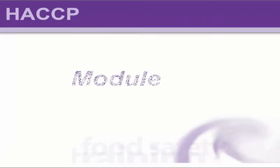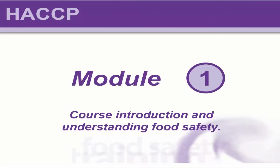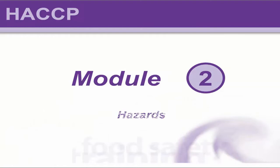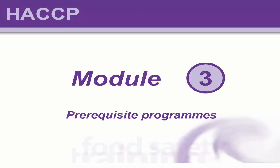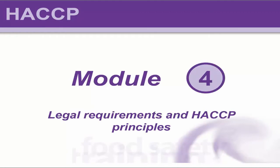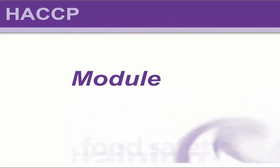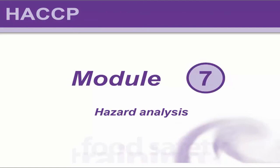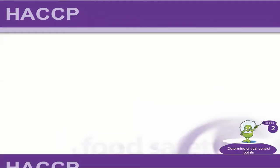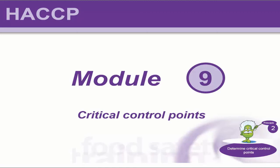The modules are going to cover 14 in total. The first one will look at a course introduction and an understanding of food safety. Module 2 will cover hazards. Module 3 is all about prerequisite programs. Module 4 covers legal requirements and HACCP principles. Module 5 will look at preparing for implementation of HACCP. Module 6 is all about flow diagrams. Module 7 is hazard analysis. Module 8 covers control measures.